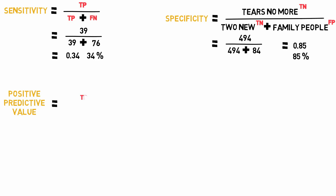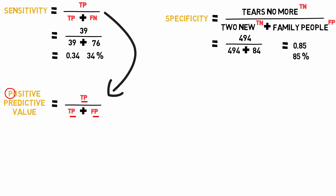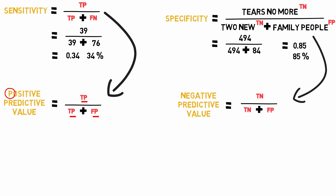Next we have positive predictive value (PPV), which equals the true positive divided by the true positive plus the false positive — similar to the sensitivity equation, but the P in 'positive' changes the false negative into a false positive, so all three elements end in P. The negative predictive value (NPV) equals the true negative over the true negative plus the false negative — the same as specificity except the N of 'negative' turns the false positive into a false negative, so all endings have N.